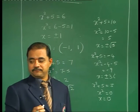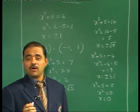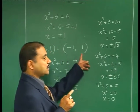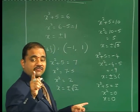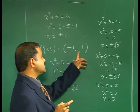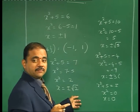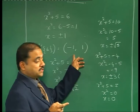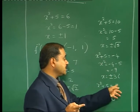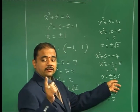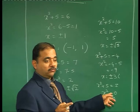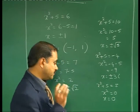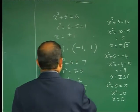So: F⁻¹({6}) = {−1, +1}. F⁻¹({6, 7}) = {−1, +1} (since 7 yields no valid Z value). F⁻¹({6, 10}) = {−1, +1} (since √5 ∉ Z). F⁻¹({−4}) gives imaginary values, so no solution. F⁻¹({5}) = {0}.